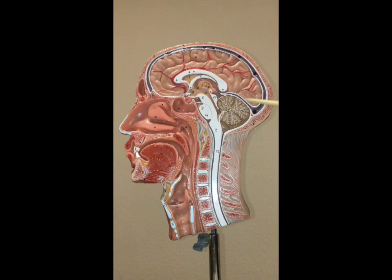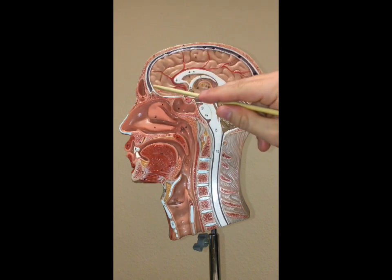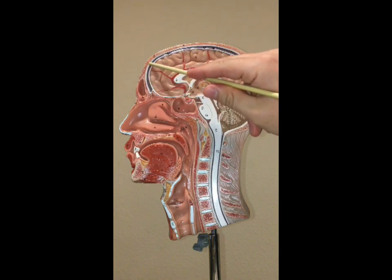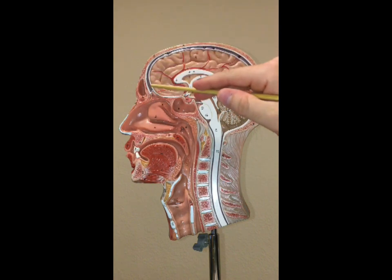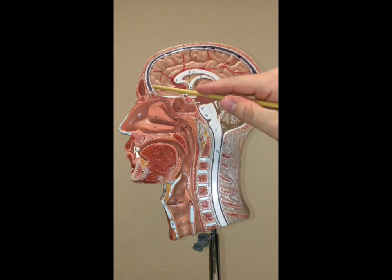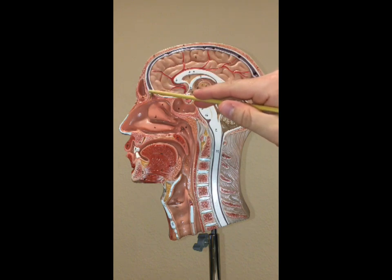Starting from the superior side of this model, right here we have the superior sagittal sinus, which carries venous blood and eventually leads to the jugular foramen, where an internal jugular vein is waiting to bring the blood to the heart. The superior sagittal sinus is outlined by this connective tissue layer.